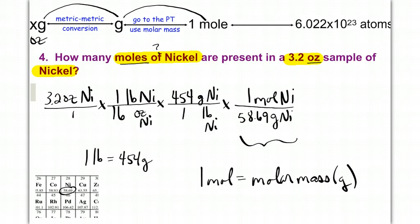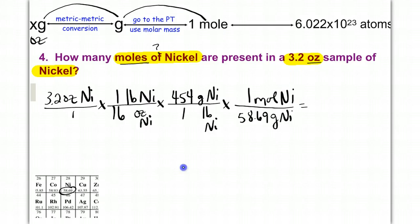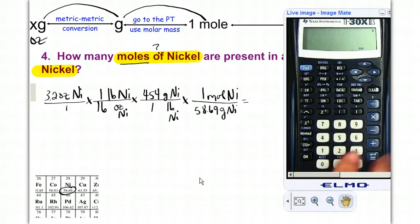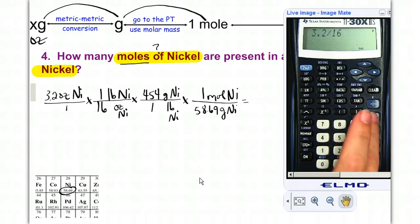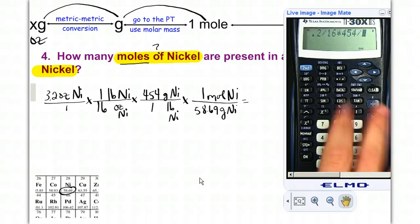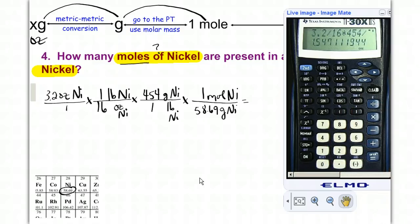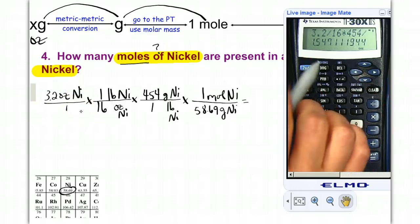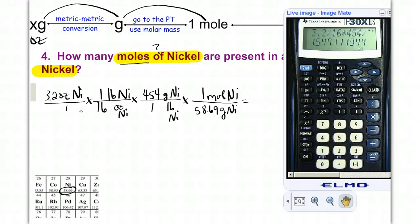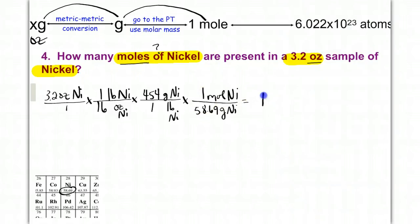Now I'm at mole, so we calculate: 3.2 divided by 16 times 454 divided by 58.69 equals 1.547. We start with 2 sig figs, so the answer should be 2 sig figs: 1.5 moles of nickel.